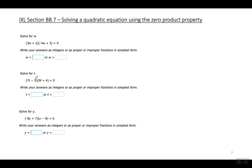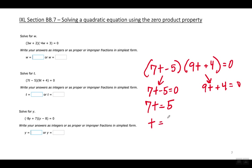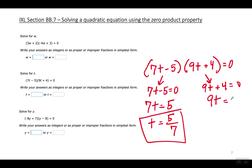Second example: seven T minus five times nine T plus four equals zero. Set each factor equal to zero and solve for T. Move the five to the right making it positive — seven T equals five, divide by seven — T equals five over seven. Move the four to the right making it negative, divide by nine — T equals negative four over nine.